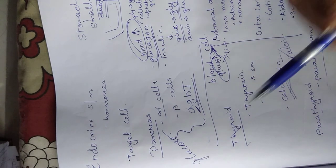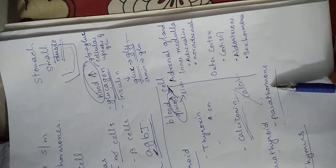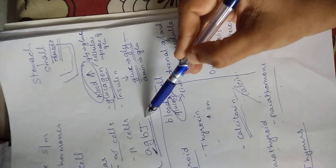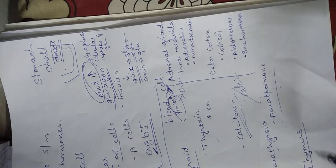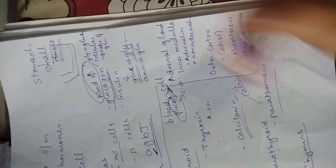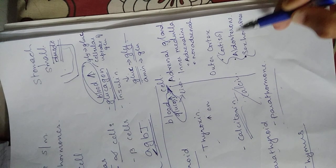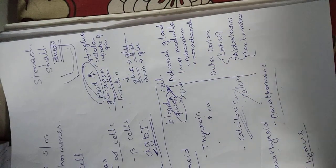We are looking at the thyroid gland — thyroxin and calcitonin — and parathormone. Then glucose regulation, thymus gland with thymosin hormone, and the adrenal gland. The adrenal cortex produces thymosin hormone, cortisol, aldosterone, and sex hormones. The inner medulla produces adrenaline and noradrenaline, which are part of the sympathetic system.